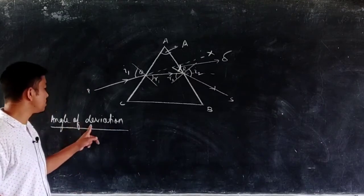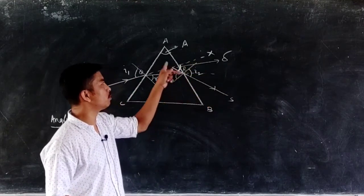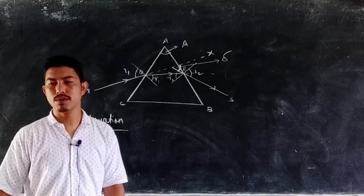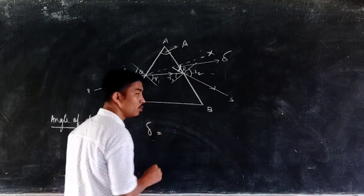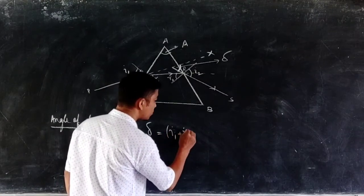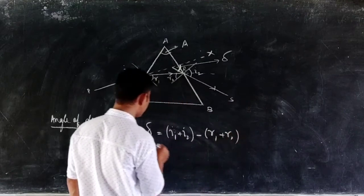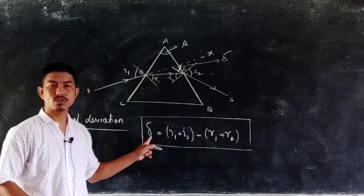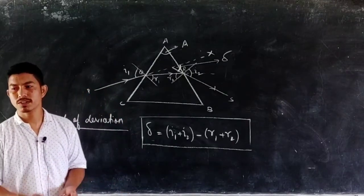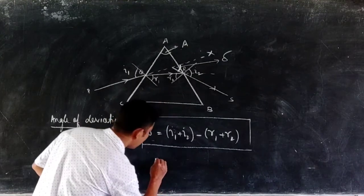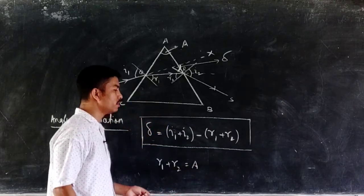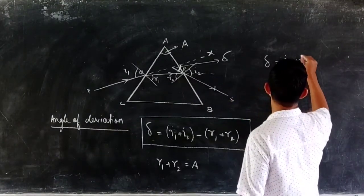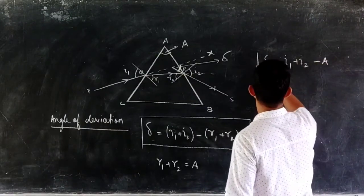The first expression to remember is: angle of deviation δ = I1 + I2 − (R1 + R2). Another relation is R1 + R2 = A, where A is the angle of the prism. Substituting that value, you can also remember it as δ = I1 + I2 − A. You can remember it in any of these forms.